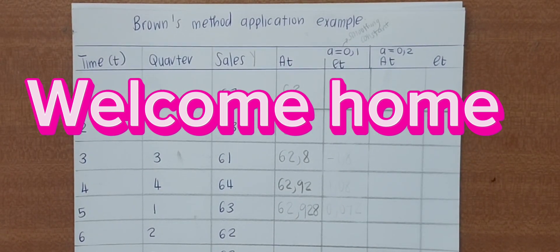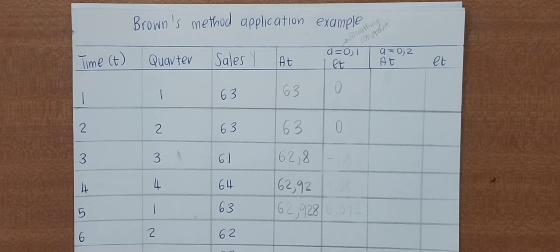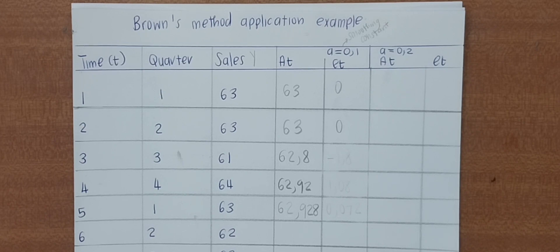Hi guys, welcome back to my YouTube channel. In today's video we are going to be applying what we learned in the previous video, which was the Brown's method, which falls under the exponential smoothing method when you are doing your time series. Just a quick recap: under the exponential smoothing method you have the Brown's method, the Holt method, as well as the Holt-Winters method.